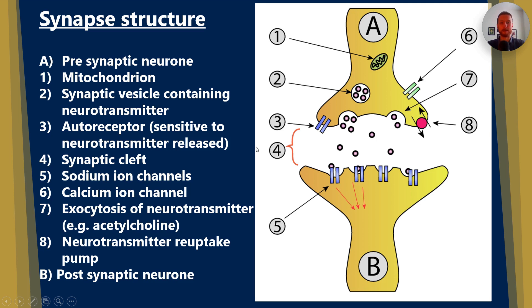Number four is the synaptic cleft. Remember, that's a gap between two neurons. Number five, we have our sodium ion channels, which is going to allow sodium to enter the post-synaptic neuron and potentially cause depolarization.